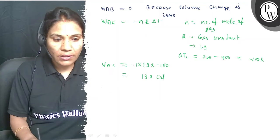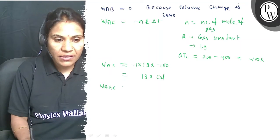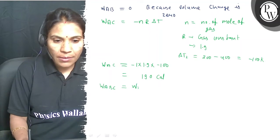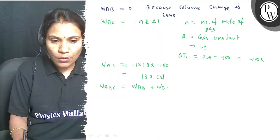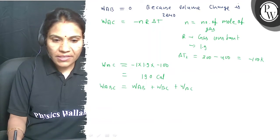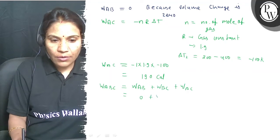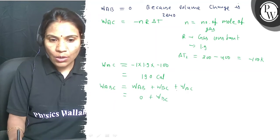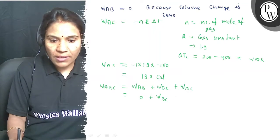From the equation, W ABC equals W AB plus W BC plus W AC. W AB is zero, and we need to find W BC.